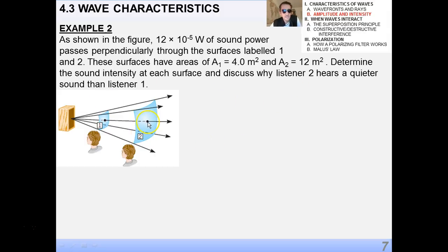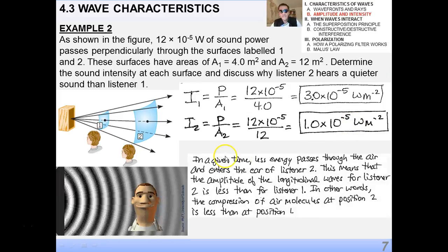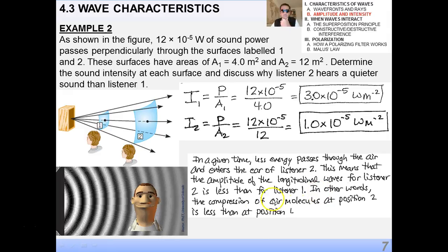Well, listener 2 hears a quieter sound, obviously, because the energy is more spread out over a greater area at that point. But I1 and I2, I get different values. This is what I get. And my formal answer to that last question was, in a given time, less energy passes through the air and enters the ear of listener 2.